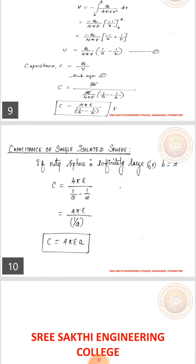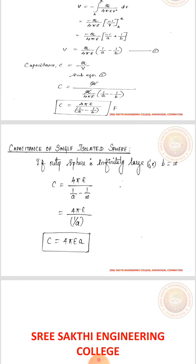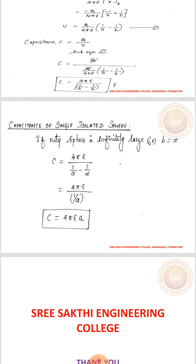Next, the capacitance of a single isolated sphere is given by C equals 4 pi epsilon divided by 1 by a minus 1 by infinity. Since it is outer space, b is considered as infinite. So the value becomes C equals 4 pi epsilon by 1 by a, and therefore the capacitance of a single isolated sphere is given by 4 pi epsilon a.